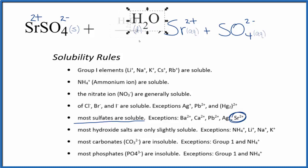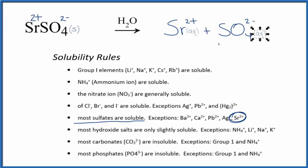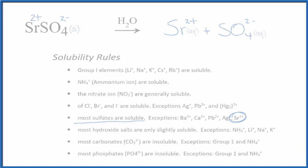Sometimes with an equation like this you'll see the water placed on top of the arrow — that's another way to write the equation for the very small amount of strontium sulfate that dissolves. You'll even see water written in the products, but since we wrote 'aq' for aqueous, it's already implied the ions are dissolved. That's how you write the equation for strontium sulfate plus water. This is Dr. B, thanks for watching.